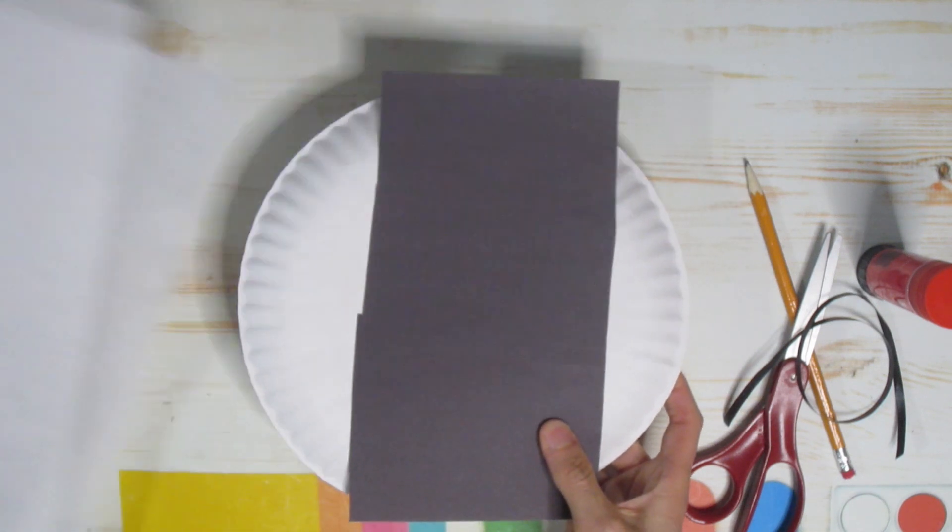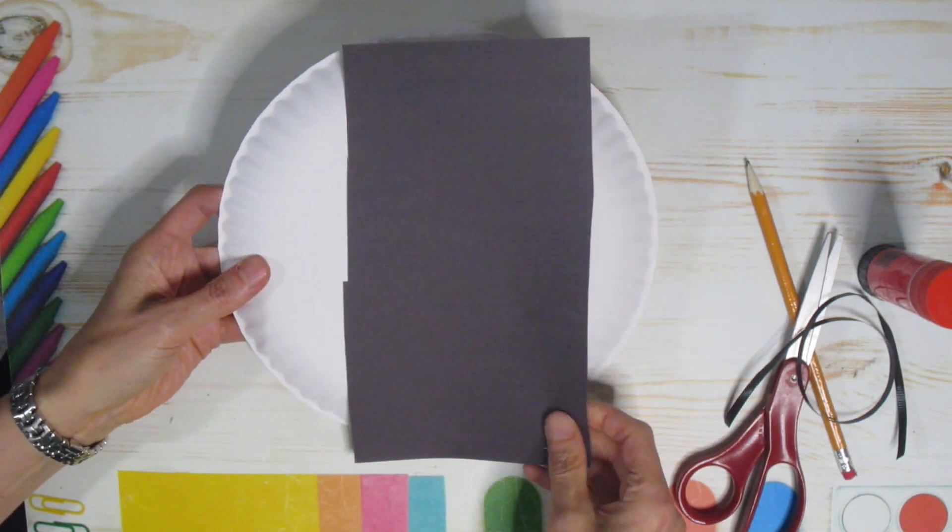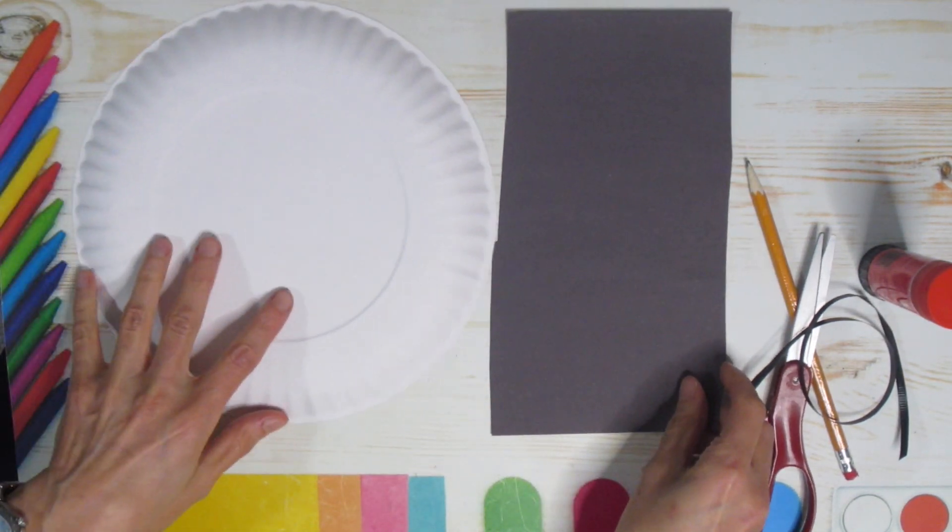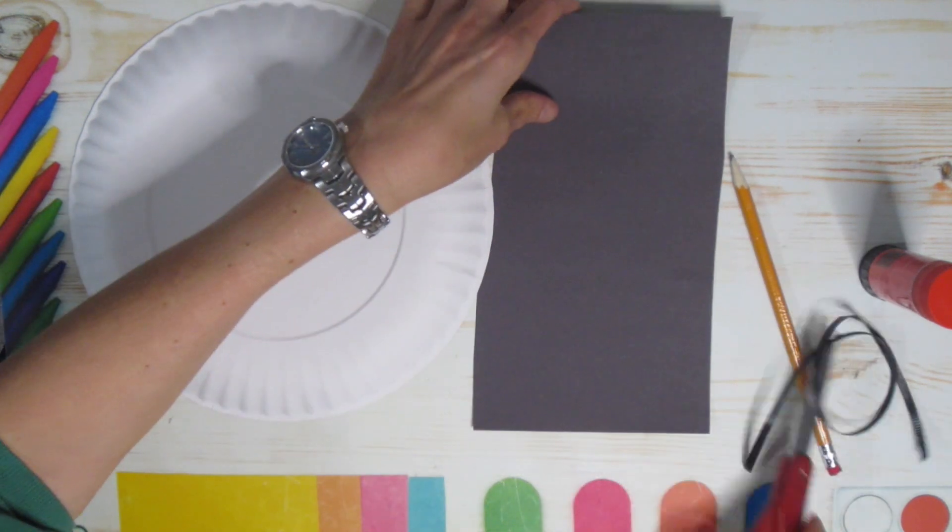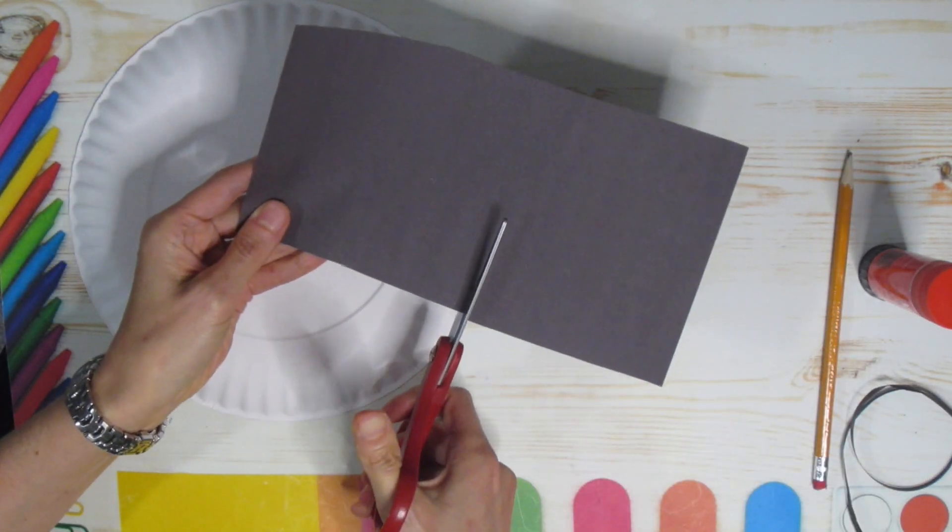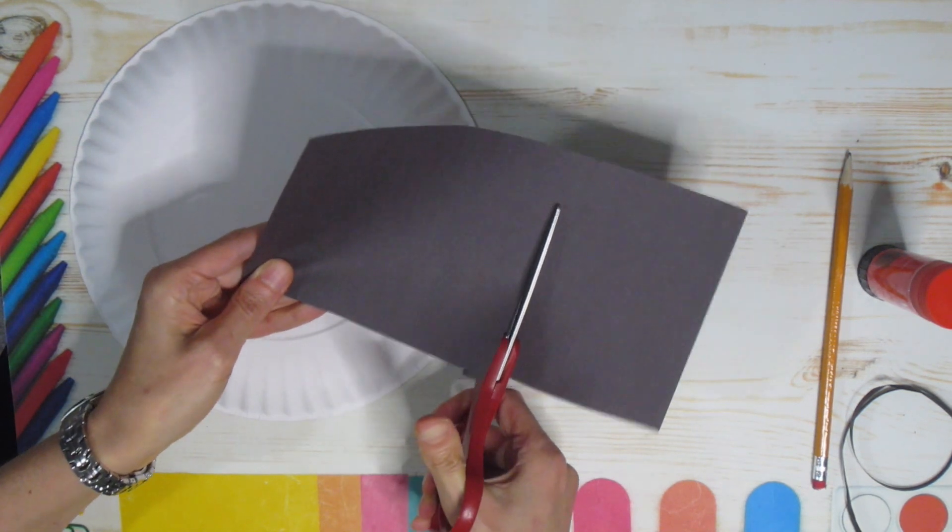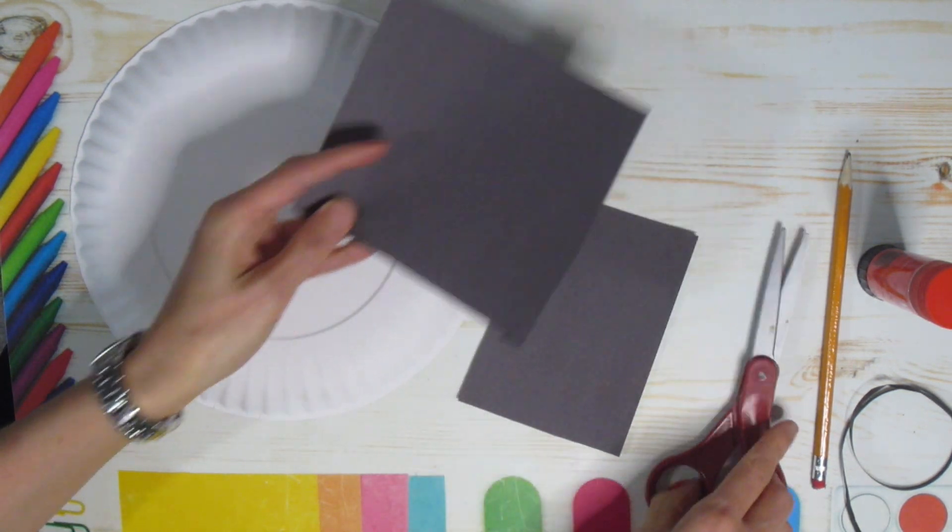Once you have all of your supplies we will get started. The very first thing you're going to do is you want to make a face. So I'm going to use my black piece of paper. I'm going to trim a little bit off for the mouth and the rest I'm going to use for the eyes.